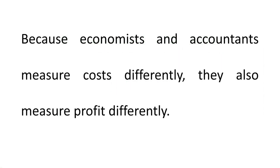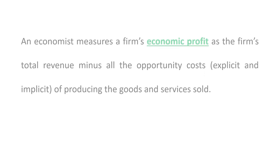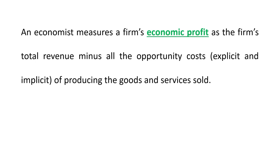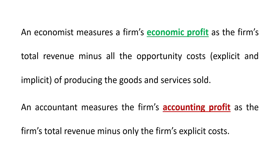Because economists and accountants measure cost differently, they also measure profit differently. An economist measures a firm's economic profit as the firm's total revenue minus all the opportunity cost, which includes explicit and implicit costs of producing the goods and services sold. Whereas an accountant measures the firm's accounting profit as the firm's total revenue minus only the firm's explicit cost.